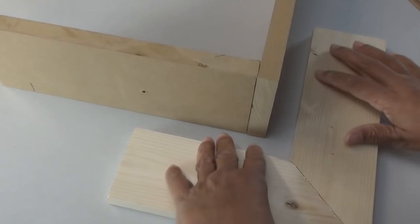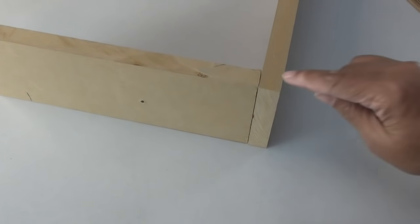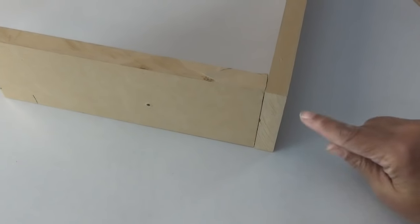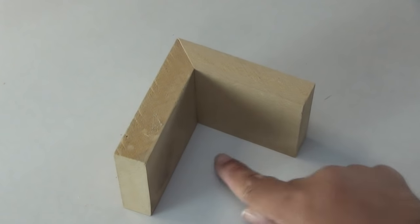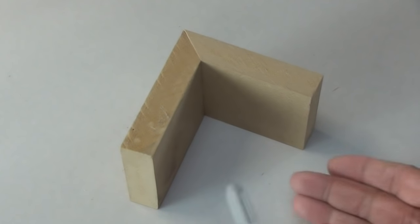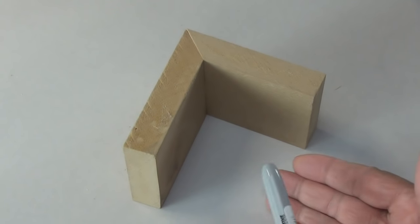But the problem is this. Seldom is this outside corner or inside corner a perfect 90 degrees. So I'm going to show you what you do. Here we have an inside corner that's less than 90 degrees, and they call that an acute angle because it's less than 90.